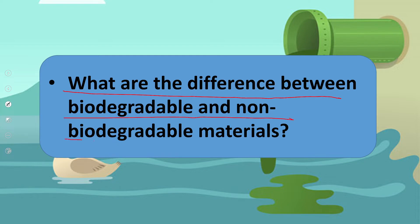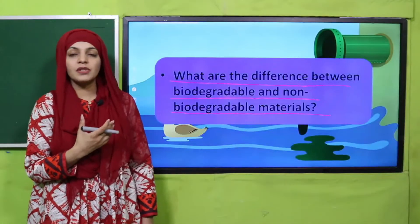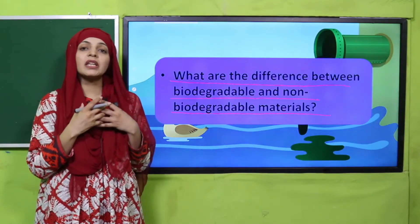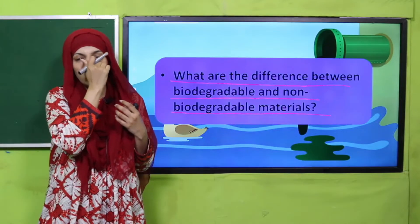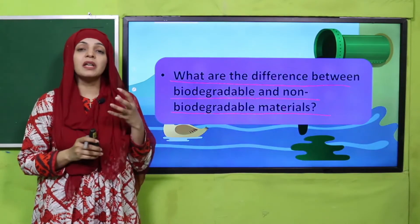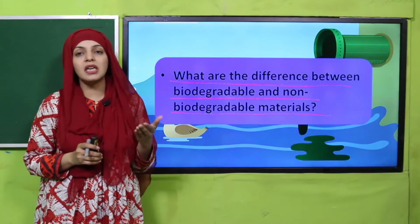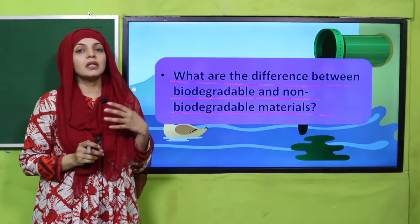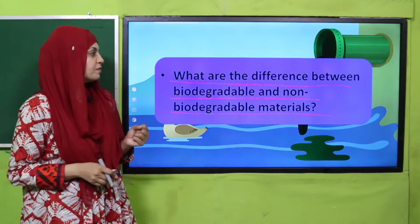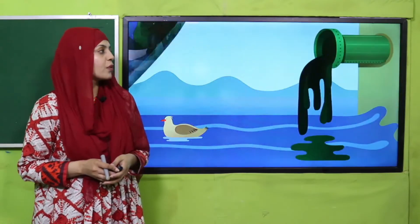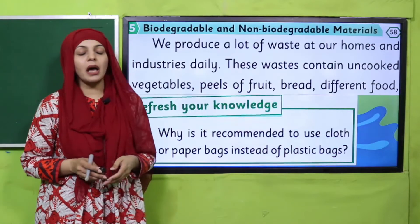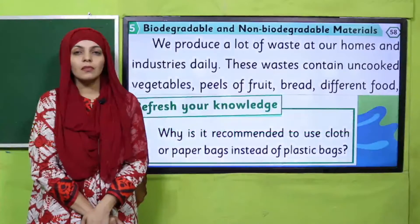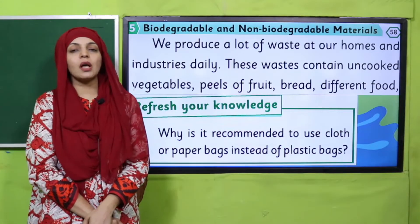Pre-reading question: what are the differences between biodegradable and non-biodegradable materials? As we saw in the activity, apple peels, banana peels — these all decompose on their own with the help of decomposers. Materials like plastic bottles and shopping bags do not decompose. Now let's start the reading. Please open page number 58 in your Science 5 books.